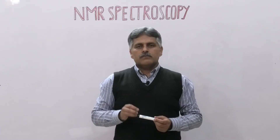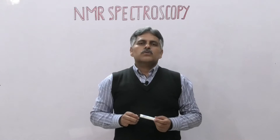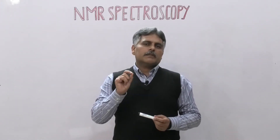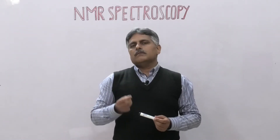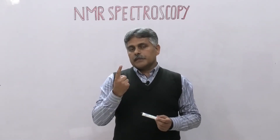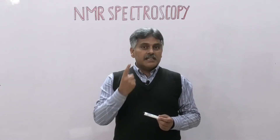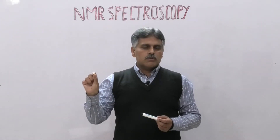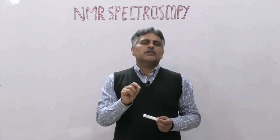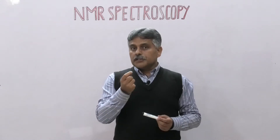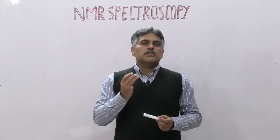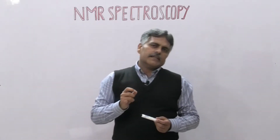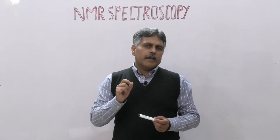In my previous lecture I discussed spin-spin splitting. In spin-spin splitting, we discussed that in any NMR spectrum of an organic compound — for example in the proton NMR spectrum of ethyl iodide — the methylene hydrogens sense the hydrogens present on the adjacent carbon, so the absorption signal for the methylene hydrogen is separated into four lines, giving us a quartet.